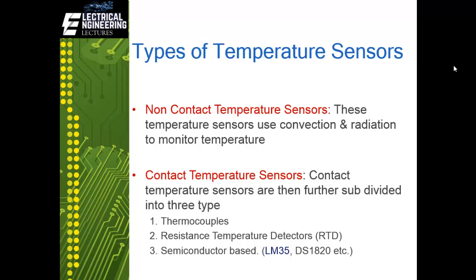Contact temperature sensors are classified into three categories. The first is the thermocouple. The basic principle of a thermocouple is that when two conductors of dissimilar metals are joined at the end of a circuit, they form a thermocouple. They do not contain any sensing element like resistive temperature devices, so they are less limited in terms of material use, but they can handle much higher temperatures — ranging up to 1700 degrees Celsius.